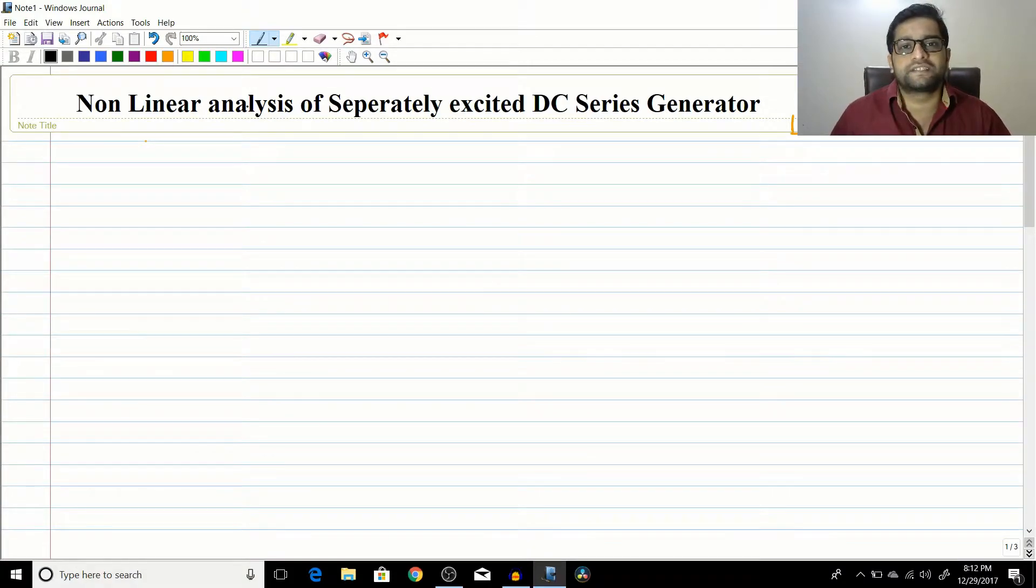In the previous session, we discussed the voltage control of DC series generator. Now in this particular section, we will start with the nonlinear analysis of a separately excited DC series generator. This nonlinear analysis is very similar to what you do in a DC motor. Therefore, this session will be a very small session. In the next session, let us do a numerical.